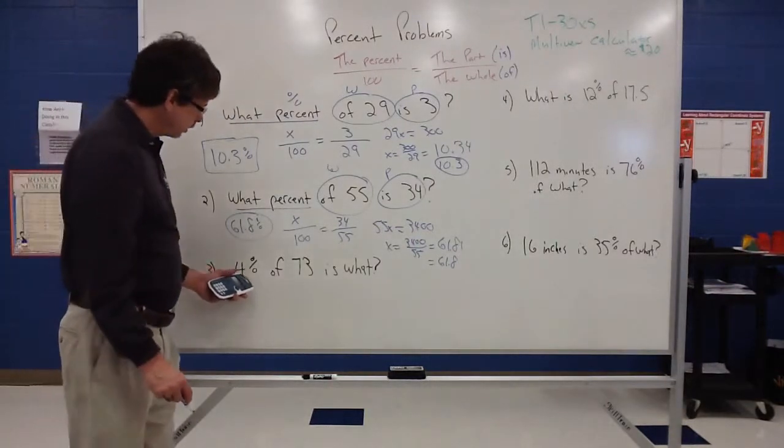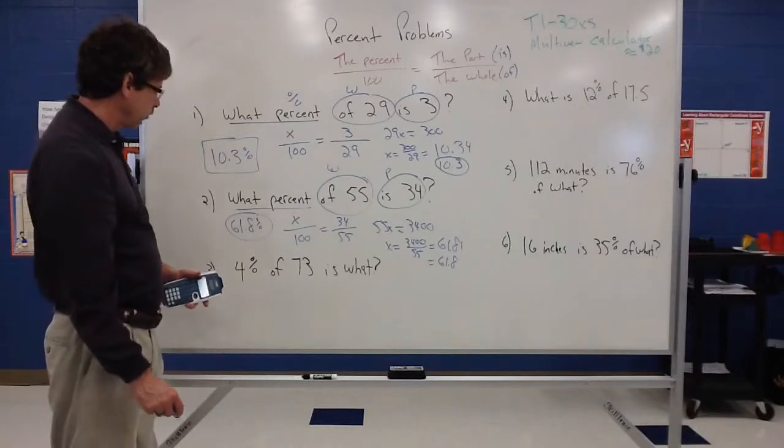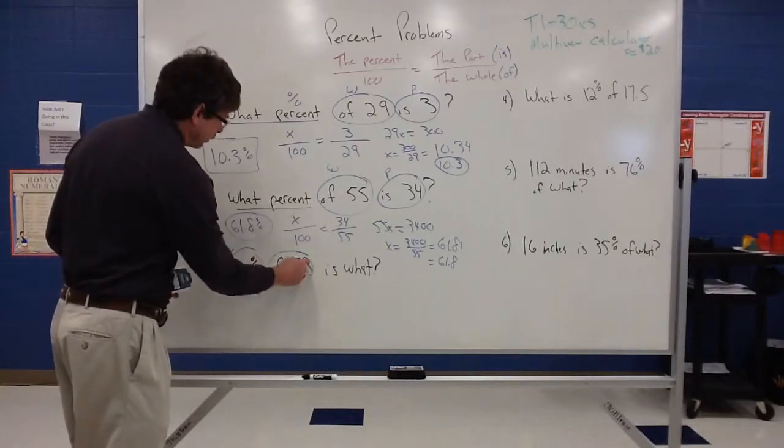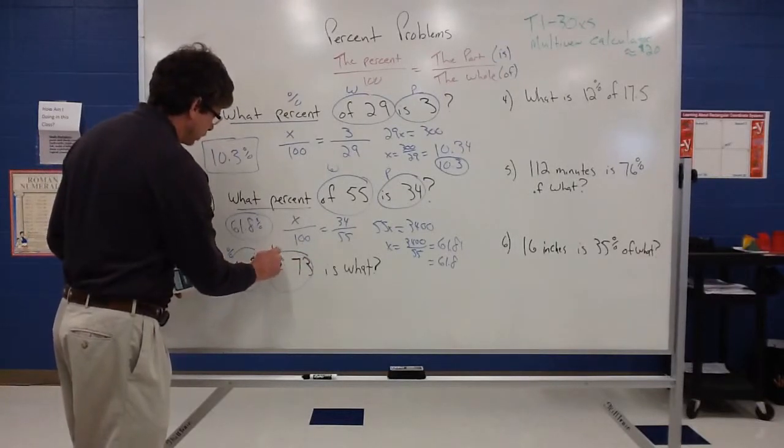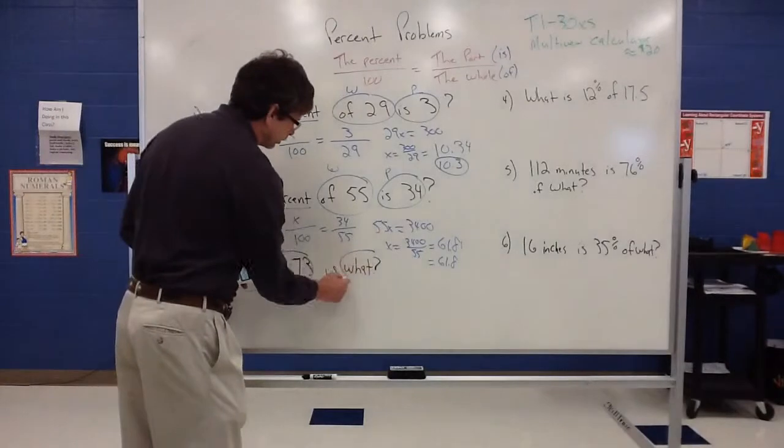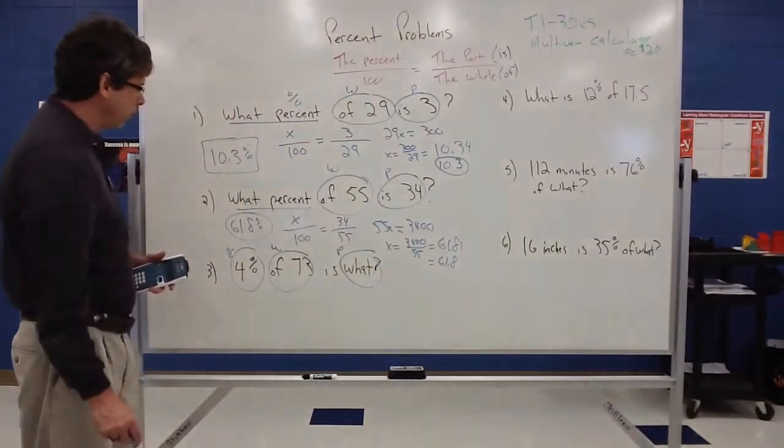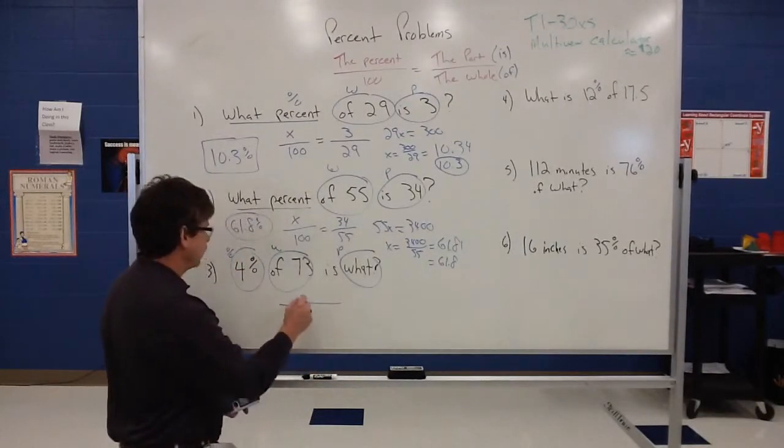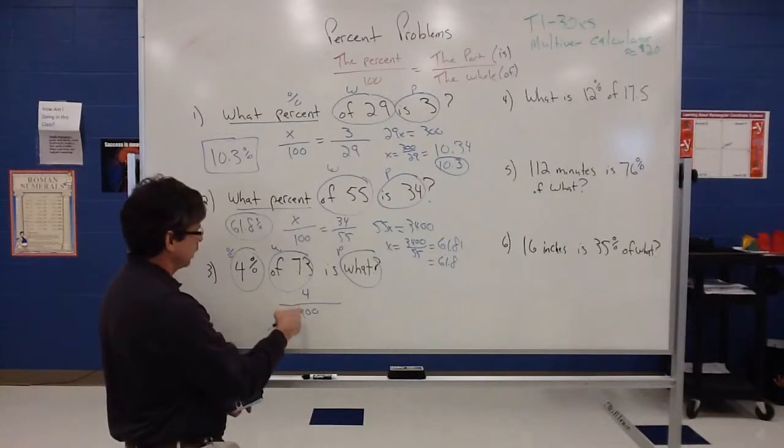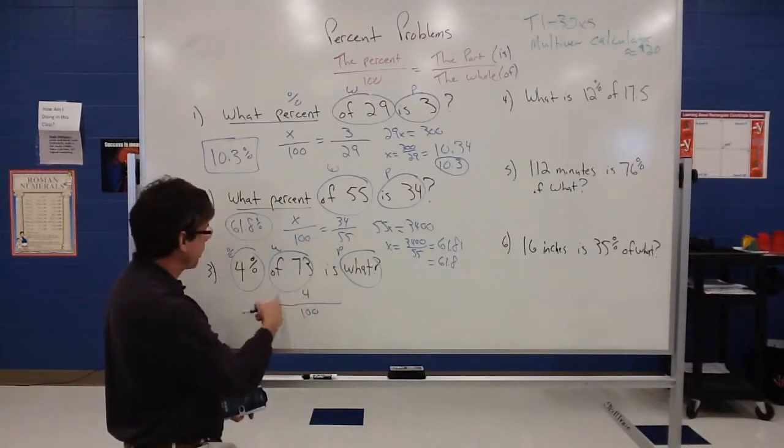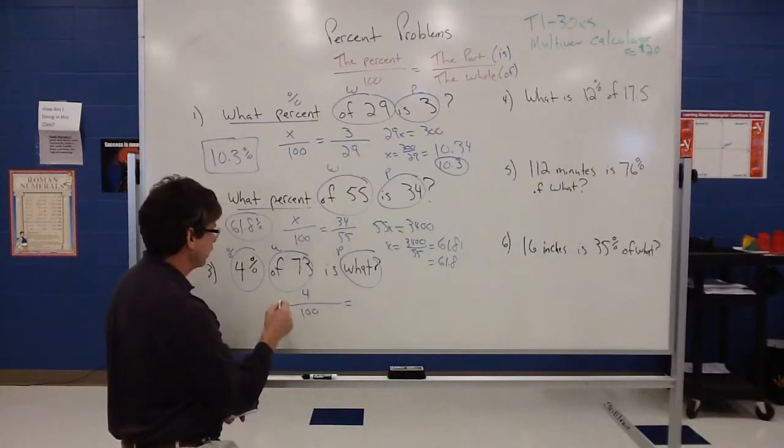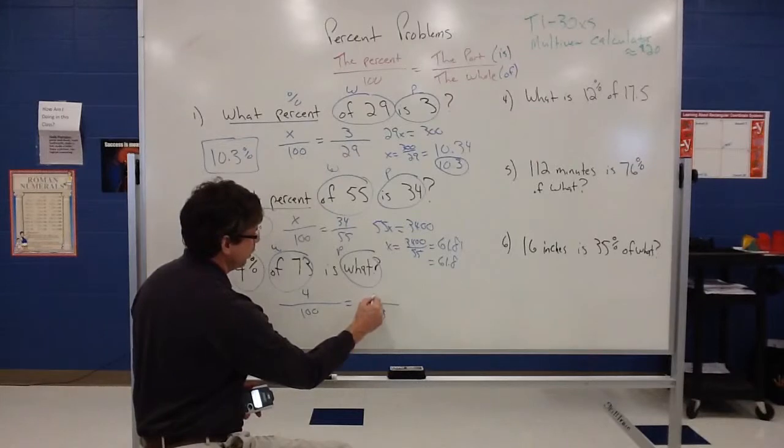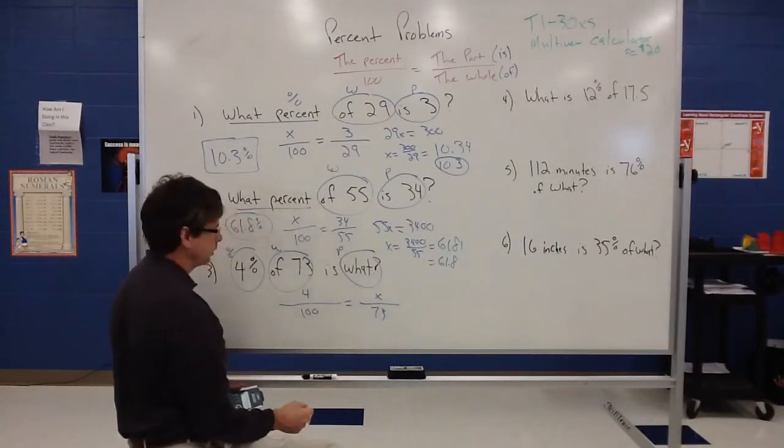So the next question we want to find, 4% of 73 is what? 4% of 73 is what? So notice this time, this is the percent of 73, that's our whole. We take the percent of the whole and that's going to equal our part. So the part is what's unknown in this problem. So when I set up a proportion, the 4%, again, we write just 4 over 100 because that percent symbol is actually what the 100 is. So 4 over 100 represents the 4%, so we can drop that out of there. The whole is 73 and we don't know what the part is, and you can actually let X represent that.